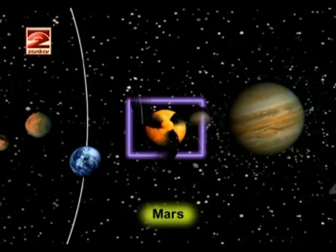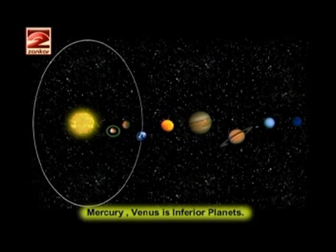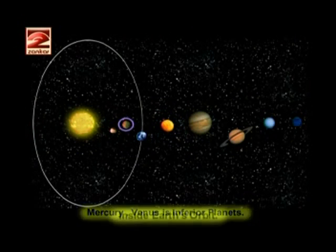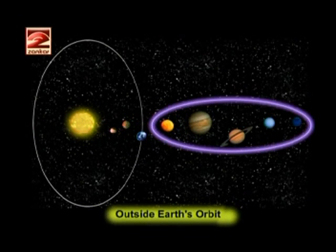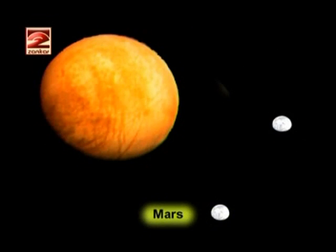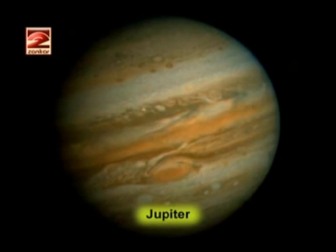Mercury and Venus are called the inferior planets as their orbits are inside Earth's orbit, and those outside Earth's orbit are the superior planets. The soil on Mars is rich in iron, which makes the planet appear red — it is called the red planet. Mars has two moons. Jupiter is the largest planet in the solar system and it rotates very fast, completing one turn around itself in just 10 hours.